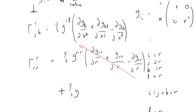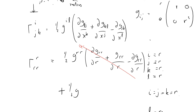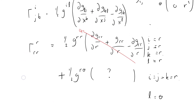Moving on to the l equals theta term: when l equals theta, we get the off-diagonal element g^r_theta, which is zero. So zero times anything is zero. Therefore Γ^r_rr = 0, which I'll note down.